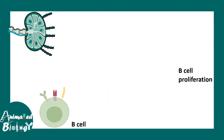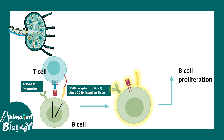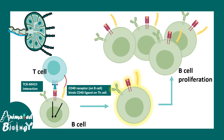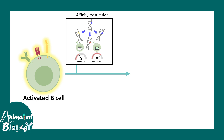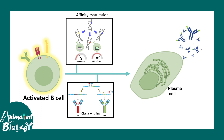In the follicular region, T helper cells interact with B cells, leading to activation of those B cells. Once activated, B cells proliferate and undergo important processes: affinity maturation for their receptors and class switching. This means they produce a specific type of antibody based on the infection type. Affinity maturation ensures only high-affinity interactions are selected, and ultimately B cells differentiate into plasma cells which secrete antibody, leading to the effector phase of the immune response.